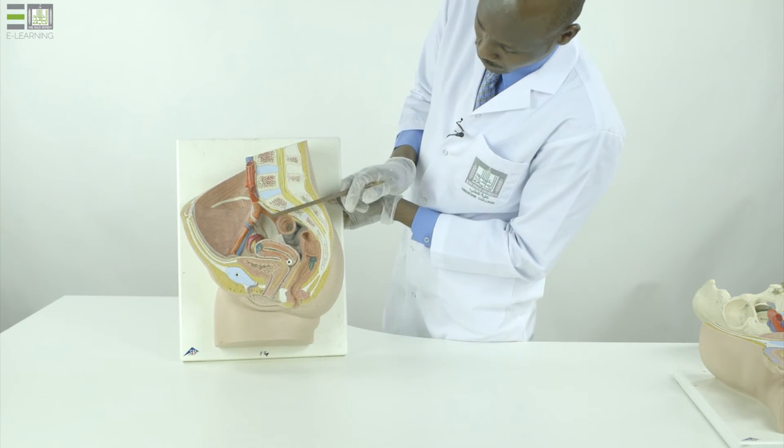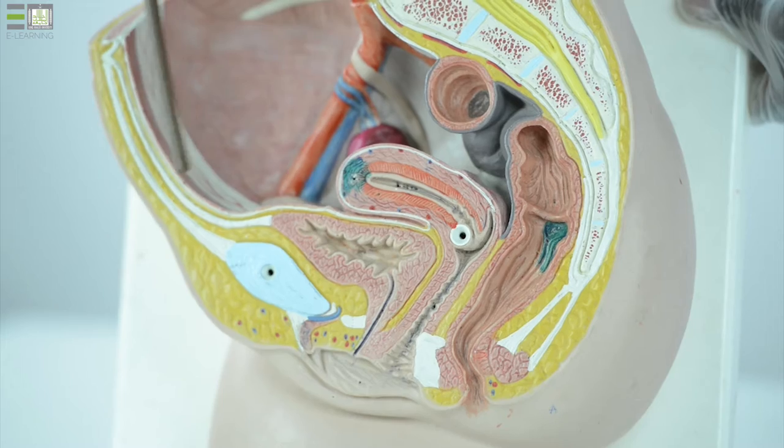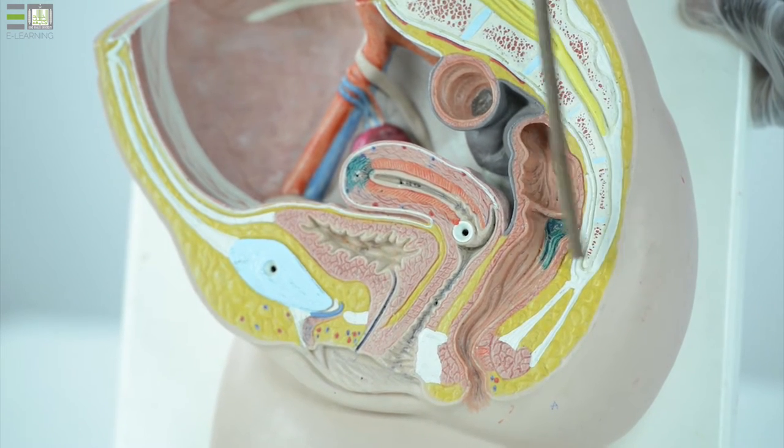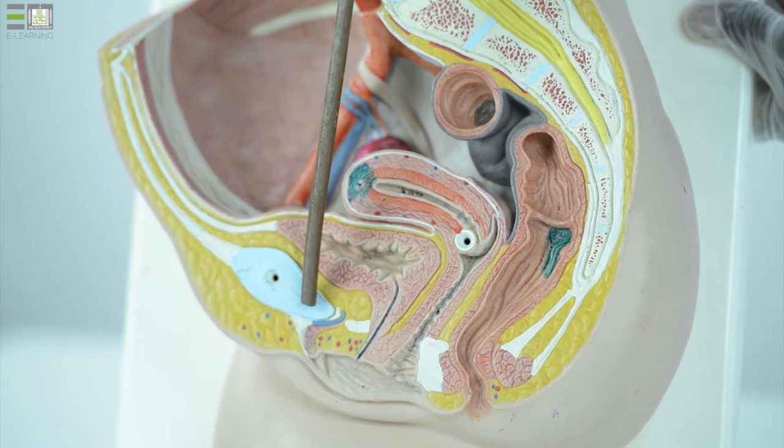This is a female sagittal section to show the structures which appear in the midline, the sacrum and coccyx posteriorly, the symphysis pubis anteriorly.